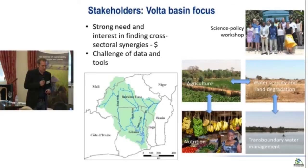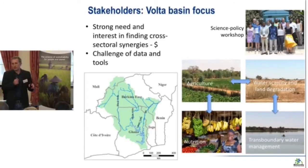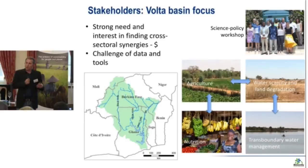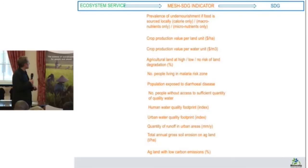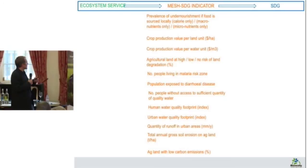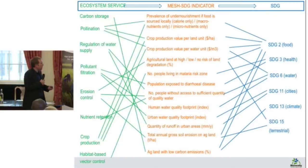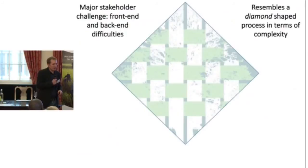Key findings from consultations with decision makers: if talking about ecosystem services it must include food security — there was zero interest in a model without it. There was strong emphasis on water scarcity and land degradation, concerns about trans-boundary water management, and growing interest in nutrition — not just yield and calories but whole-of-diet. Looking at indicators such as water quality, runoff, annual runoff, soil erosion linked to multiple SDGs, one key challenge is finding a way to communicate these complex multiple linkages in a simplified manner for decision makers.